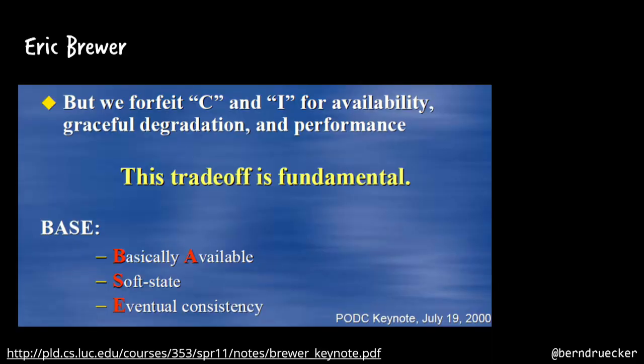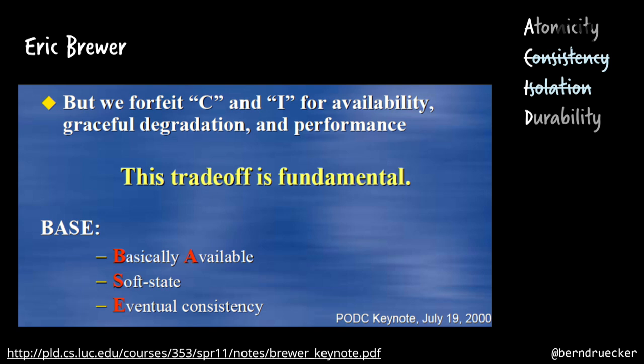Eric Brewer said back in the year 2000 that if we want performant and distributed systems, we have to find C and A — referring to the consistency and isolation properties of ACID. This is fundamental to building really distributed and scalable systems. He named that BASE: Basically Available Soft State Eventual Consistency. That's one of the sources where eventual consistency as a term was coined — the acronym never really took off, but it's one of the roots where people thought about doing architectures differently.